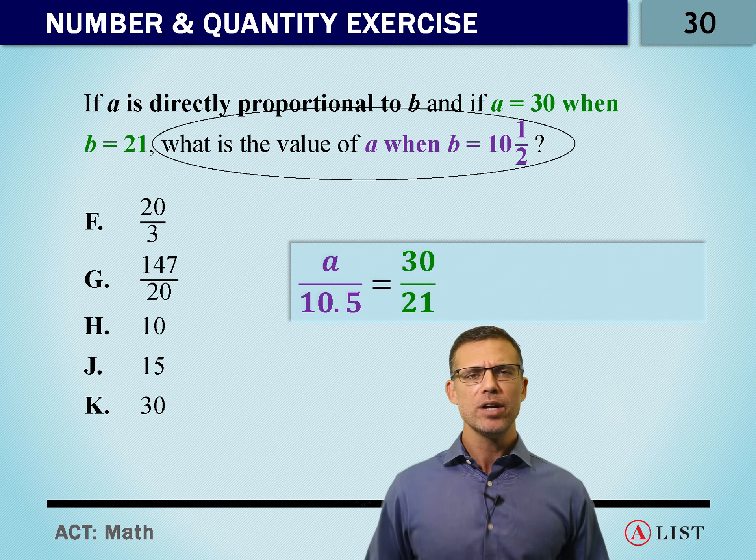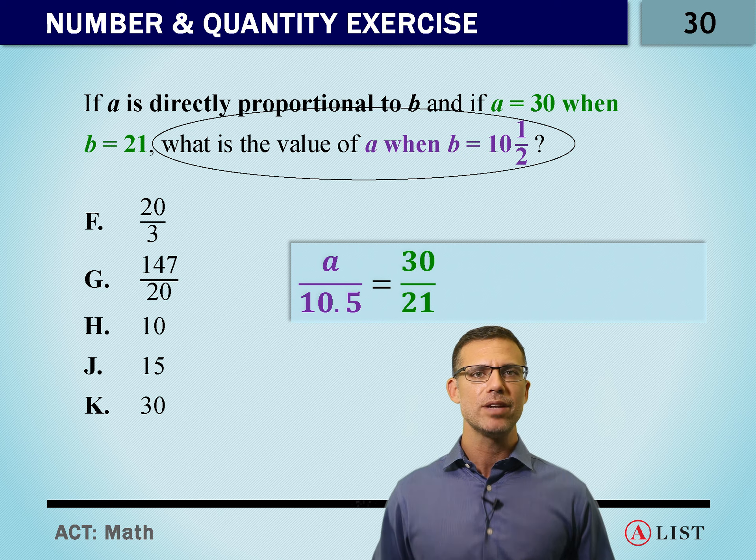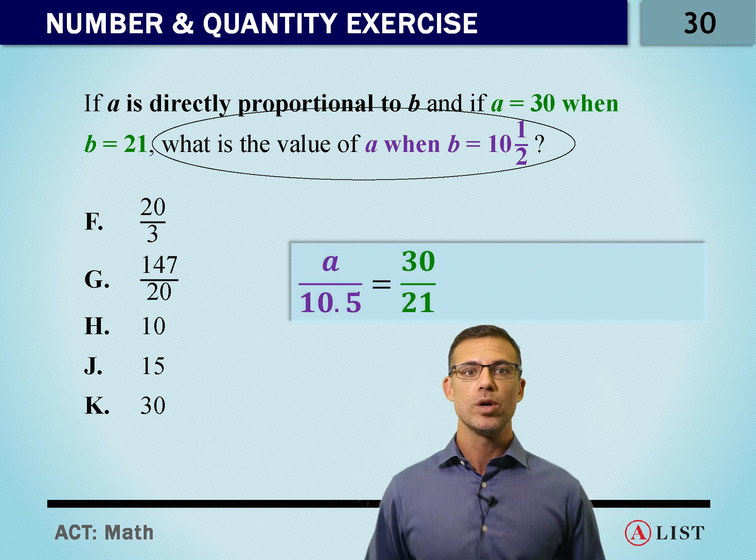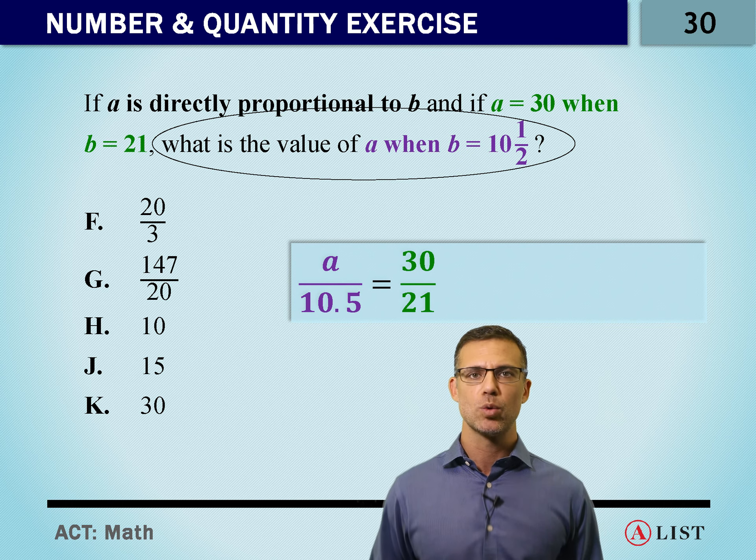But in order to figure out A, we have to compare it to the proportion we were given at the start of the question, which is 30 over 21. A is 30, B is 21.